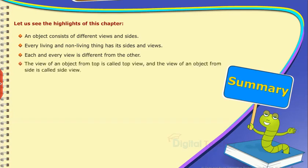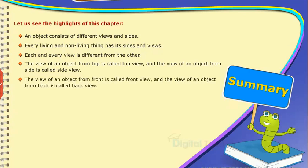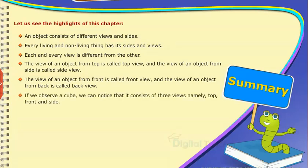The view of an object from top is called top view and the view of an object from side is called side view. The view of an object from front is called front view and the view of an object from back is called back view. If we observe a cube, we can notice that it consists of three views namely top, front, and side.